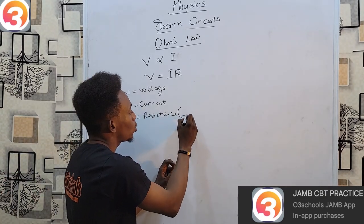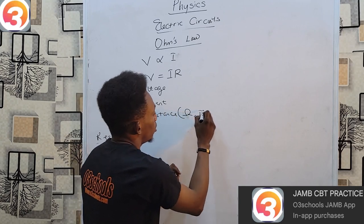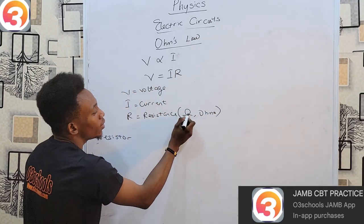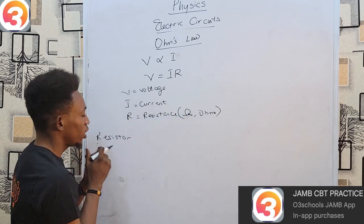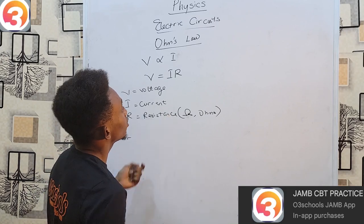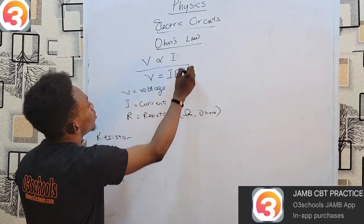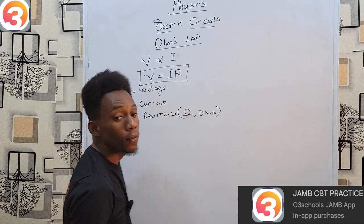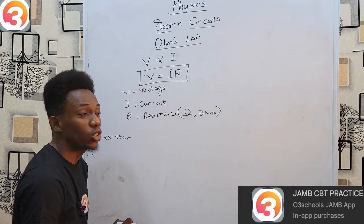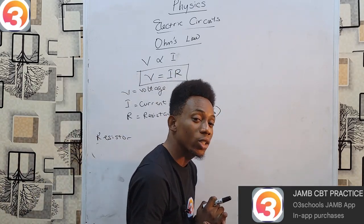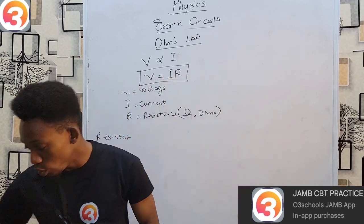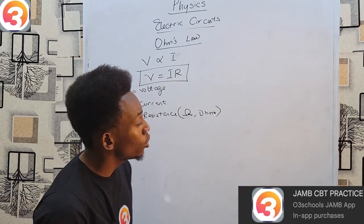The unit of resistance is ohms, and its symbol is the Greek letter omega (Ω). So V = IR is our formula for Ohm's Law. Now, if we want to understand the resistance of a resistor, we must look at the factors that affect it — there are about four of them.